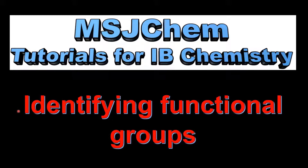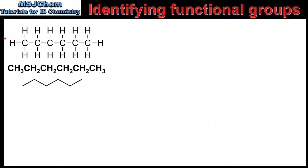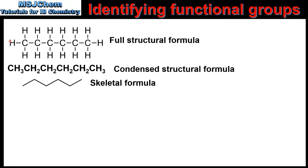This is MSJChem. In this video I'll be looking at identifying functional groups. We'll be looking at three types of structural formulas: the full structural formula, the condensed structural formula, and the skeletal formula. For each example we'll be looking at how to identify the type of functional group in each type of formula.